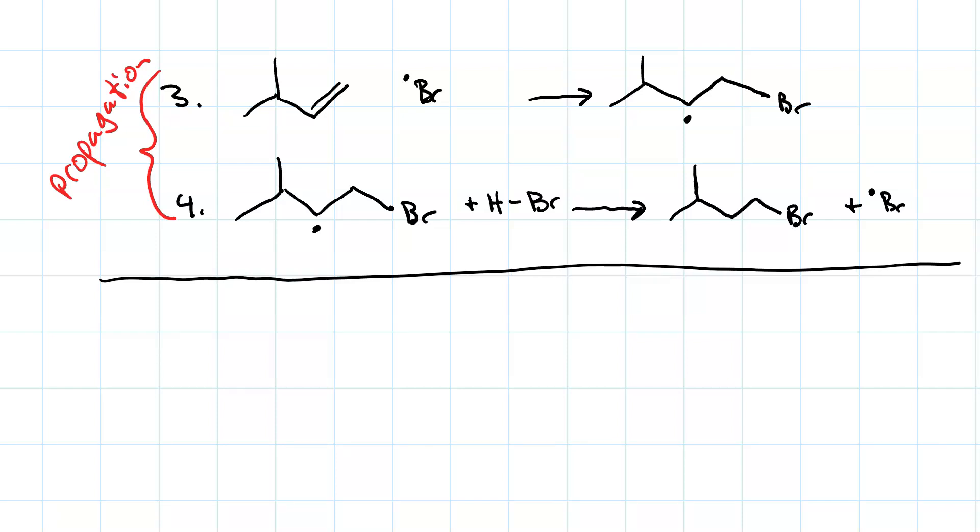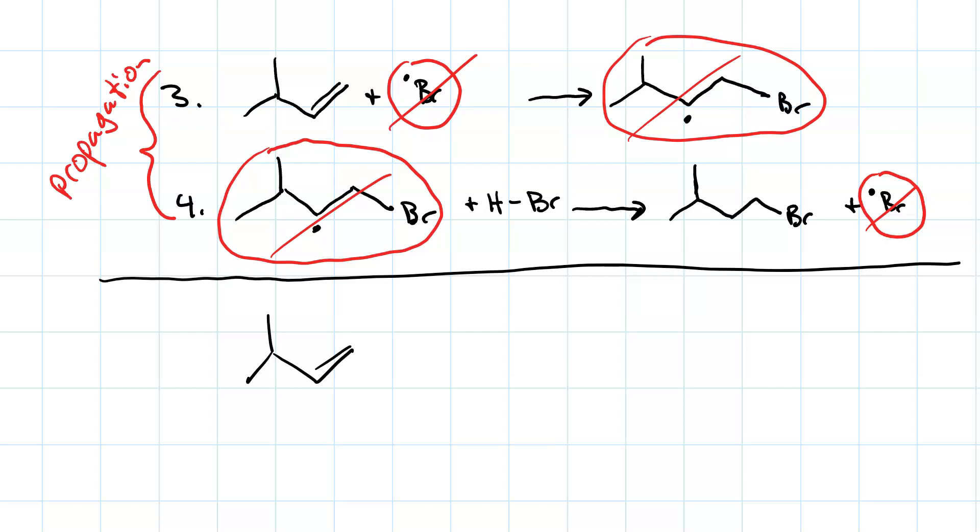So when we're summing up these two reactions, we can cancel stuff that occurs in both reactants and products. There's a bromine radical in the reactant side of step 3 and in the product side of step 4. And then there's an alkyl bromine radical here and here, which we can cancel. So the sum of these two, the asymmetric alkene plus HBr becomes the anti-Markovnikov alkyl bromide.